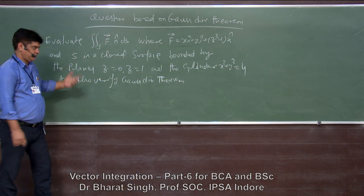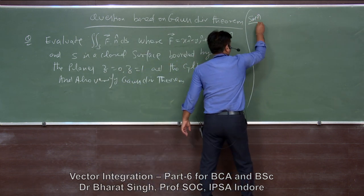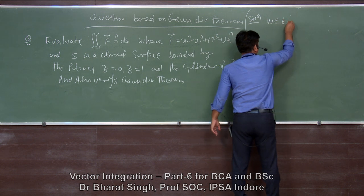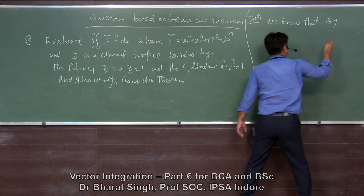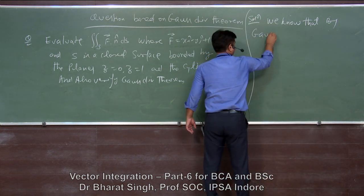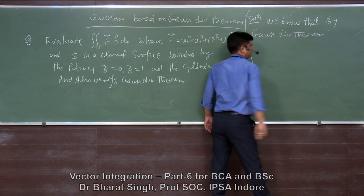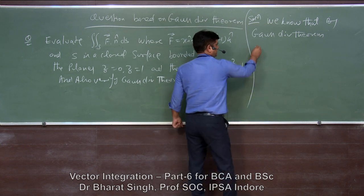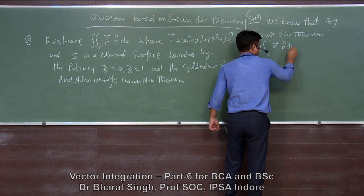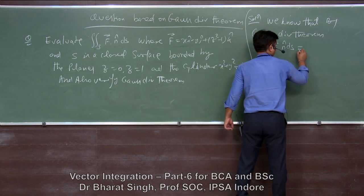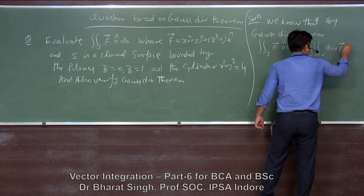Let us start the solution. We know that by the Gauss Divergence Theorem, the surface integral of F-vector dot n-cap ds is equal to the volume integral of the divergence of F-vector dV.